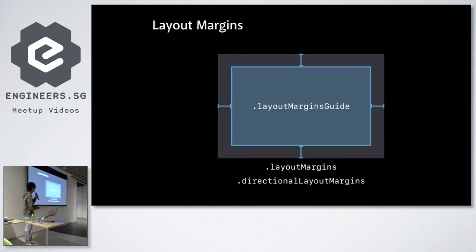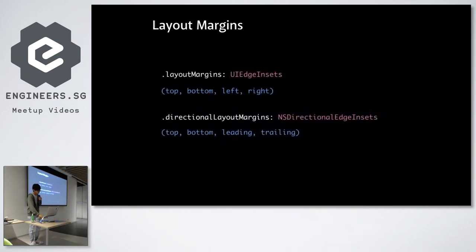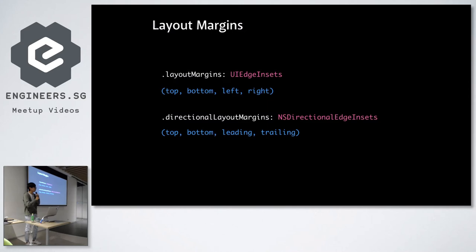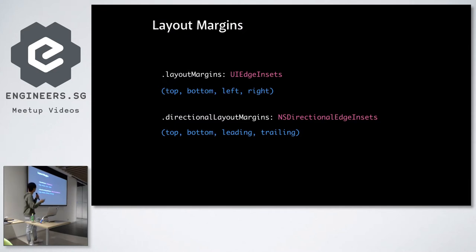So what about layout margins? The diagram looks very similar to the safe area — we have a UILayoutGuide called the layout margins guide, and you can use layout frames and all the layout anchors. The difference between layout margins and safe area: for the insets part, we now have two properties. The first is layoutMargins, a UIEdgeInsets with top, bottom, left, and right. The second is directionalLayoutMargins, an NSDirectionalEdgeInsets — instead of left and right, it has leading and trailing. When dealing with right-to-left languages, you'll want the directional layout margins. This API is available only from iOS 11. If you're supporting older devices, you can either calculate what the leading and trailing values are yourself, or just use the layout margins guide, which supports leading anchors.